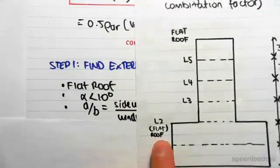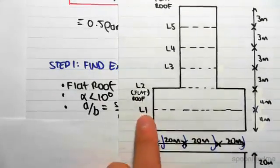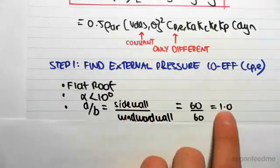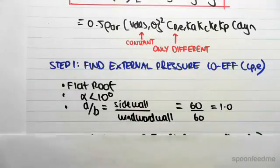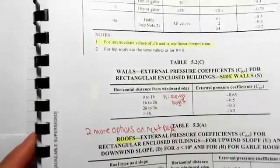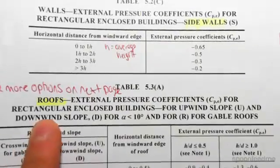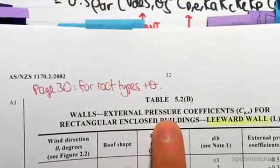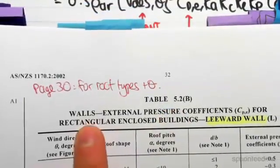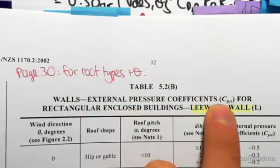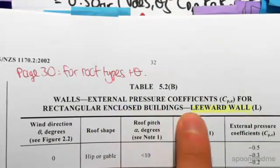So for the flat top roof over there and the flat roof on level two, d on b are both one, which means that using table 5.3a—table 5.3a reads roof external—sorry, we're looking at leeward wall. Sorry, we're using table 5.2b: walls, external pressure coefficient cpe for rectangular enclosed buildings, leeward wall.